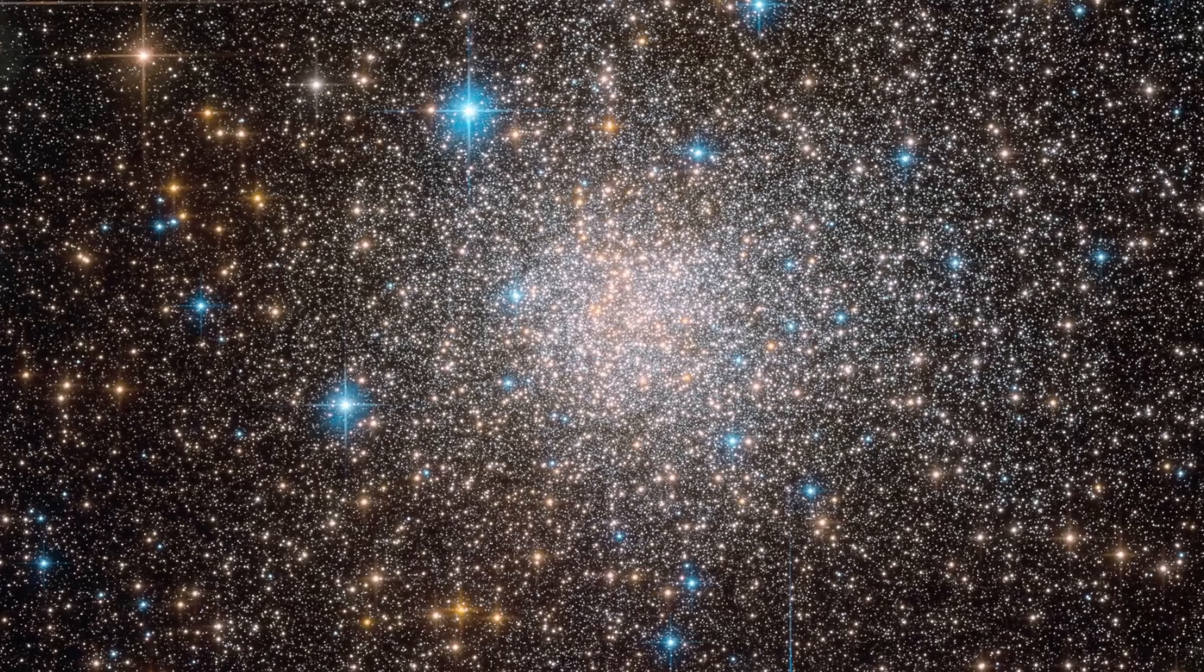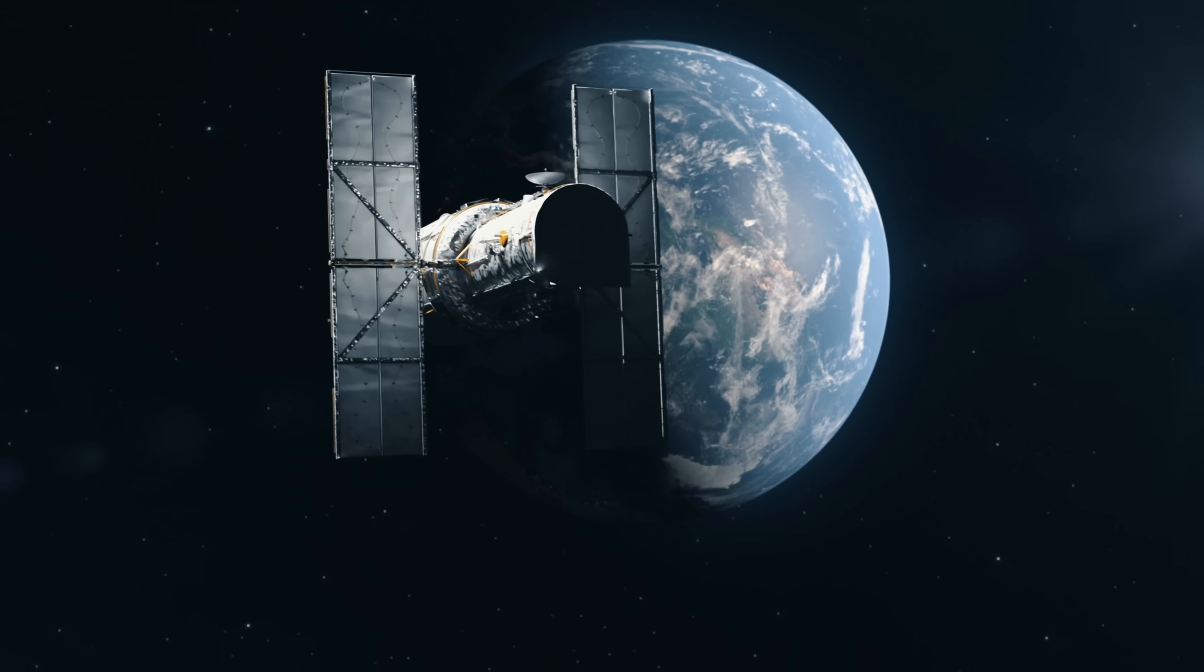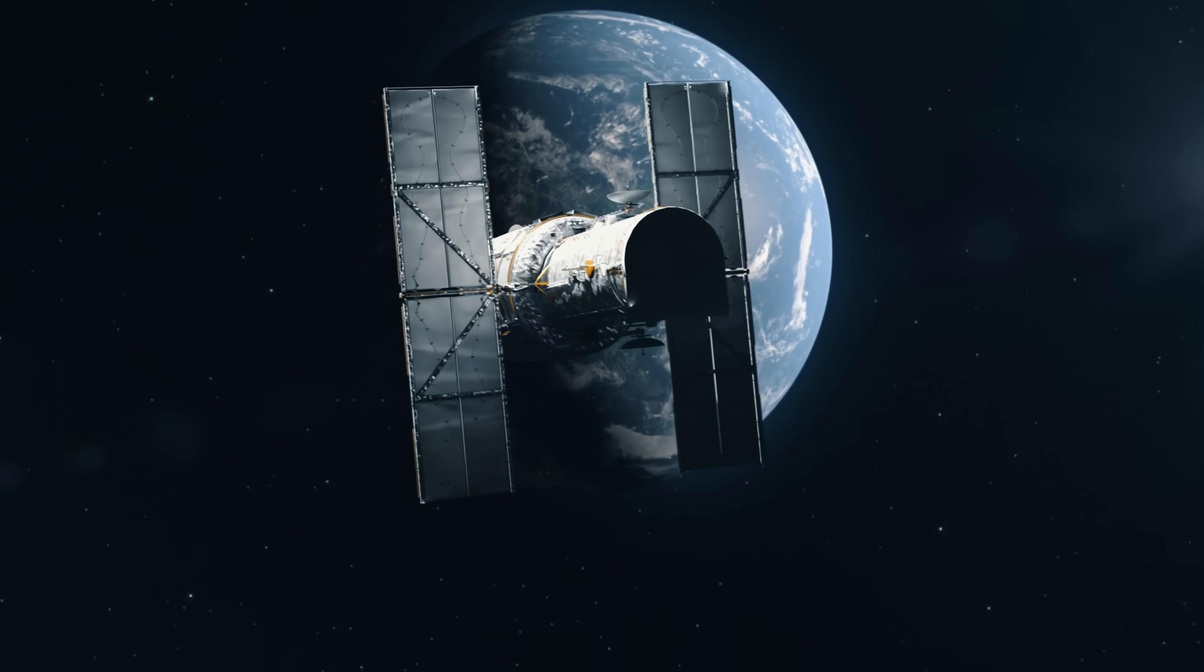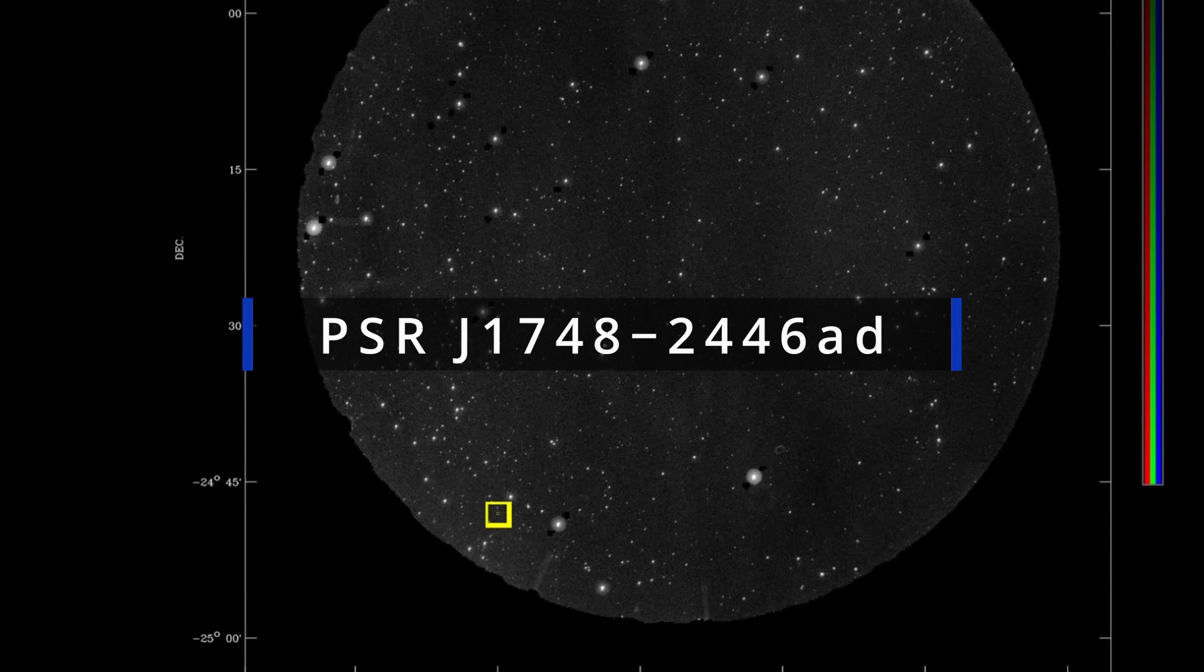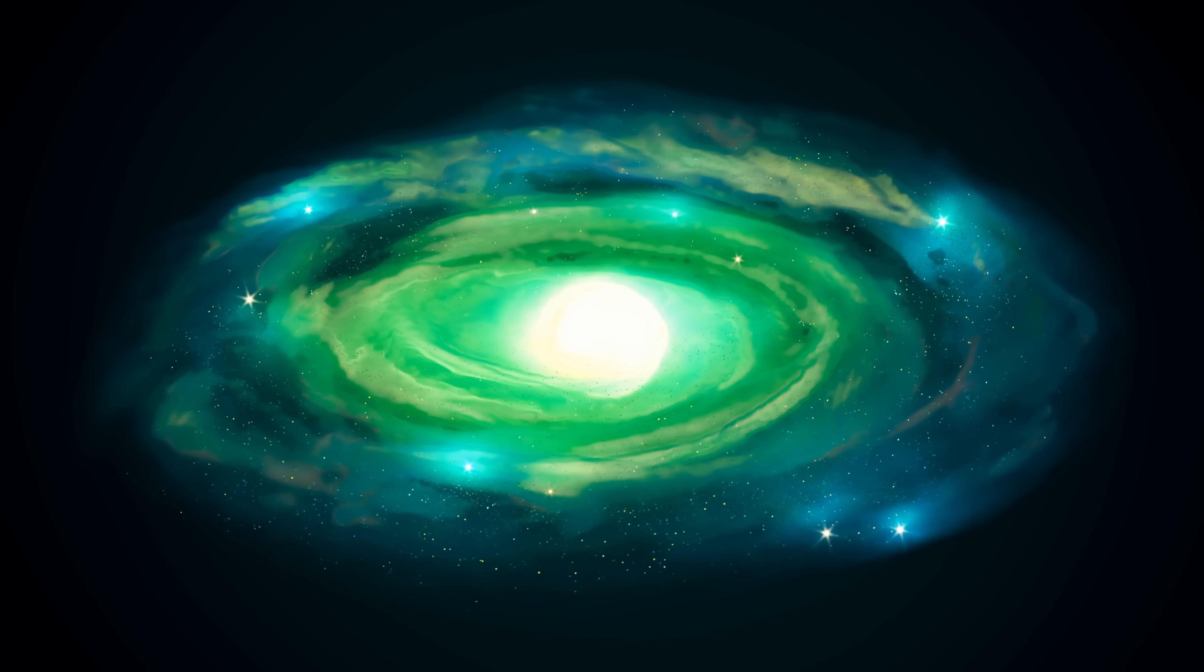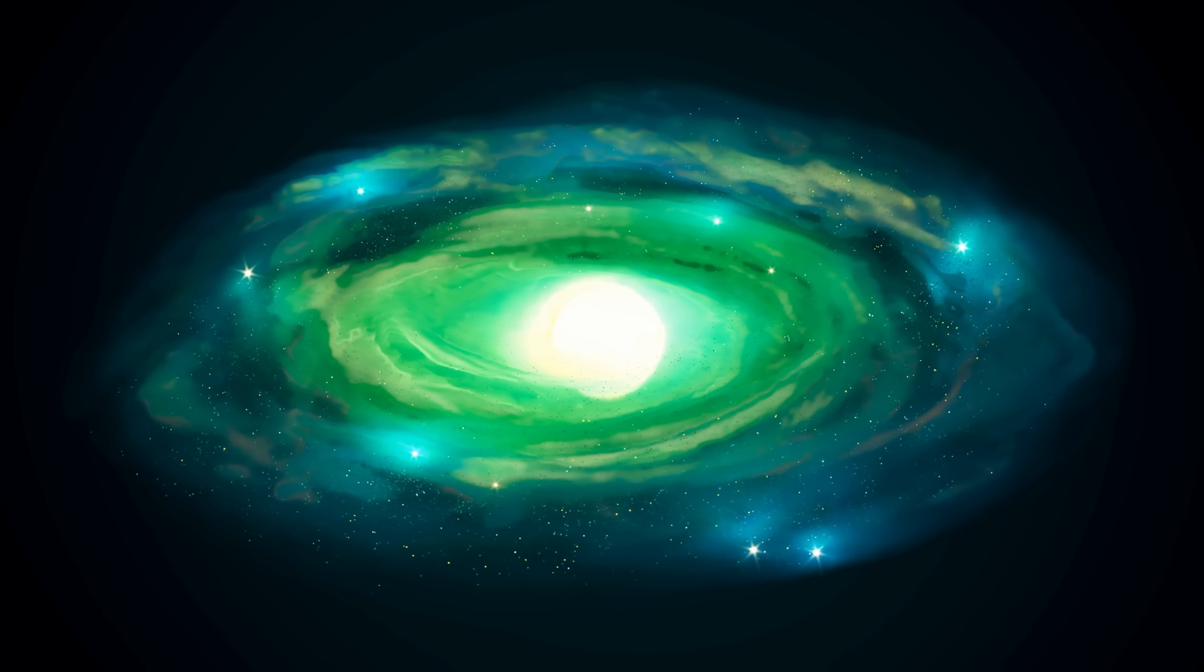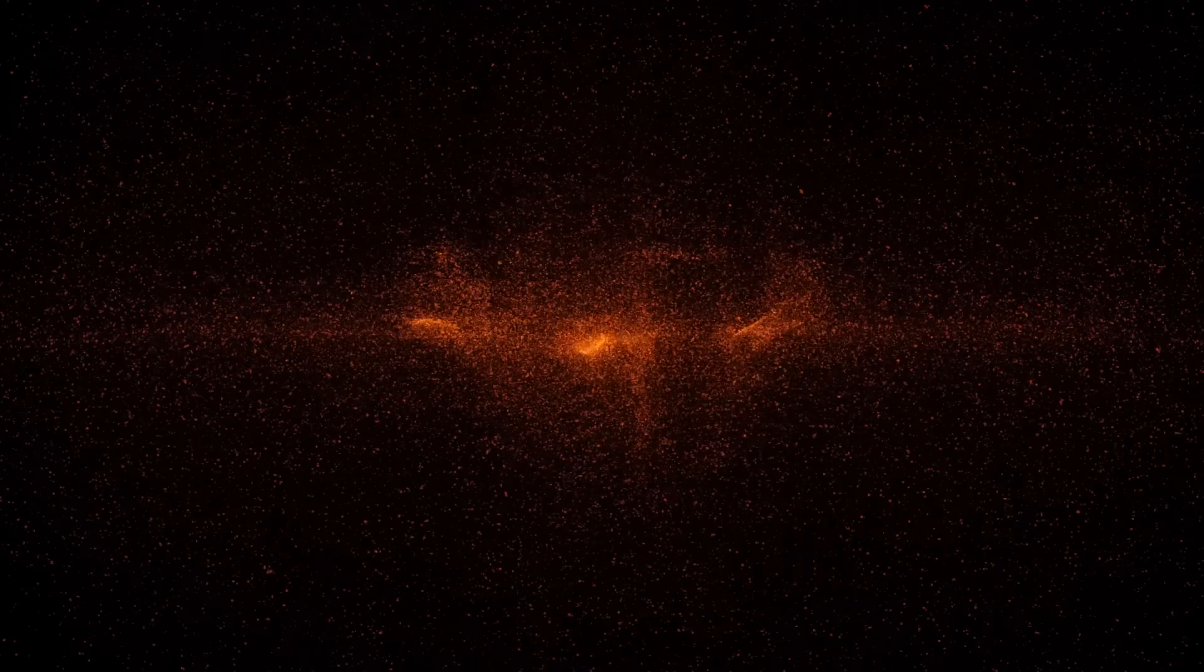But there is another much more famous cluster known as Terzan 5. Back in 2004, something really exciting was discovered here as well. A team from the university where I was studying, from McGill University, discovered a pulsar that you can kind of see right here, known as PSR J1748-2446ad, that surprisingly spins at exactly the same value.